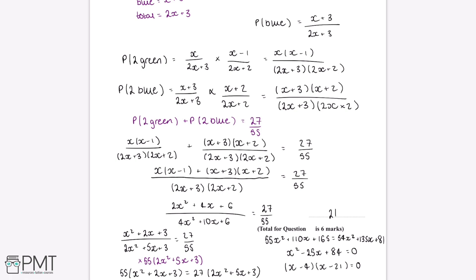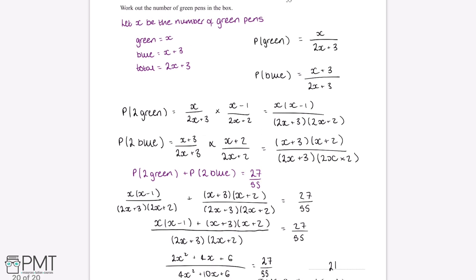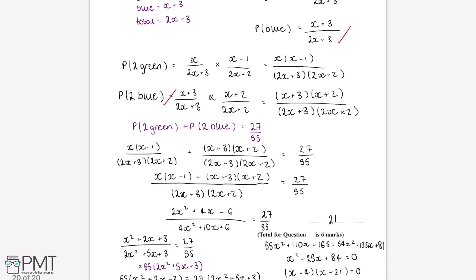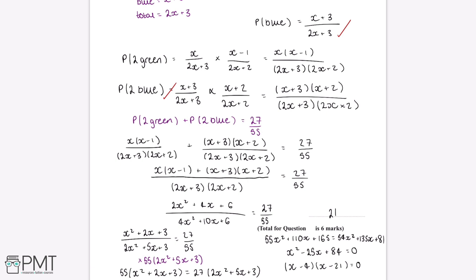This question is worth six marks: one mark for working out the probability of choosing a green or blue pen; a second for working out the probability of choosing two green or two blue pens; a third for forming an appropriate equation; a fourth for forming the quadratic; a fifth for solving it; and a sixth mark for the correct answer of 21.